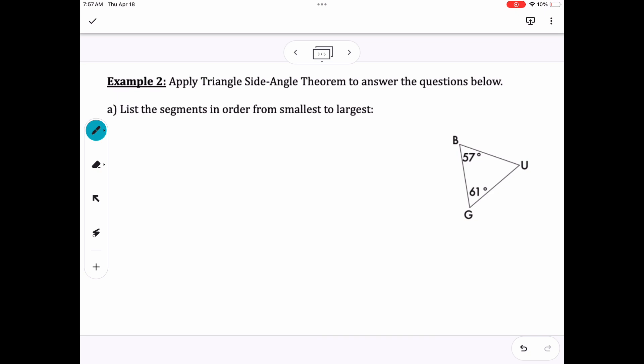Here we're going to apply what we learned the other day to help us put things in order, smallest to biggest, whether that be segments or angles. So here we're given two angles, and we need the third to be able to figure out what the segments or the sides are in order from smallest to the largest. So all three angles add up to 180 degrees.